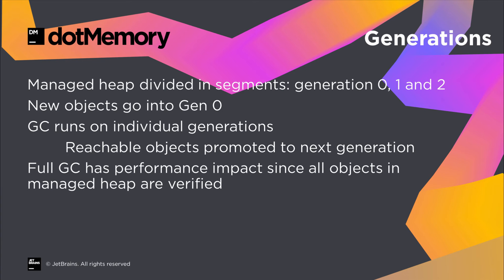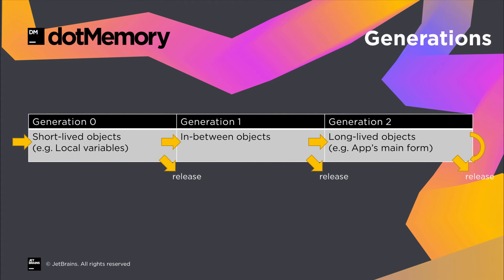The .NET runtime splits the managed heap in segments: Gen 0, Gen 1, and Gen 2. Whenever we create an object, it's allocated in Gen 0. When that part of memory is full, the garbage collector will run and remove unused objects. It will also promote objects that are still in use to Gen 1. The same thing happens when Gen 1 is full — the garbage collector runs and objects are then promoted to Gen 2. And when Gen 2 is full, garbage collection is done across all generations. If at this stage Gen 2 has not enough memory available for allocations, an out-of-memory exception will be thrown.